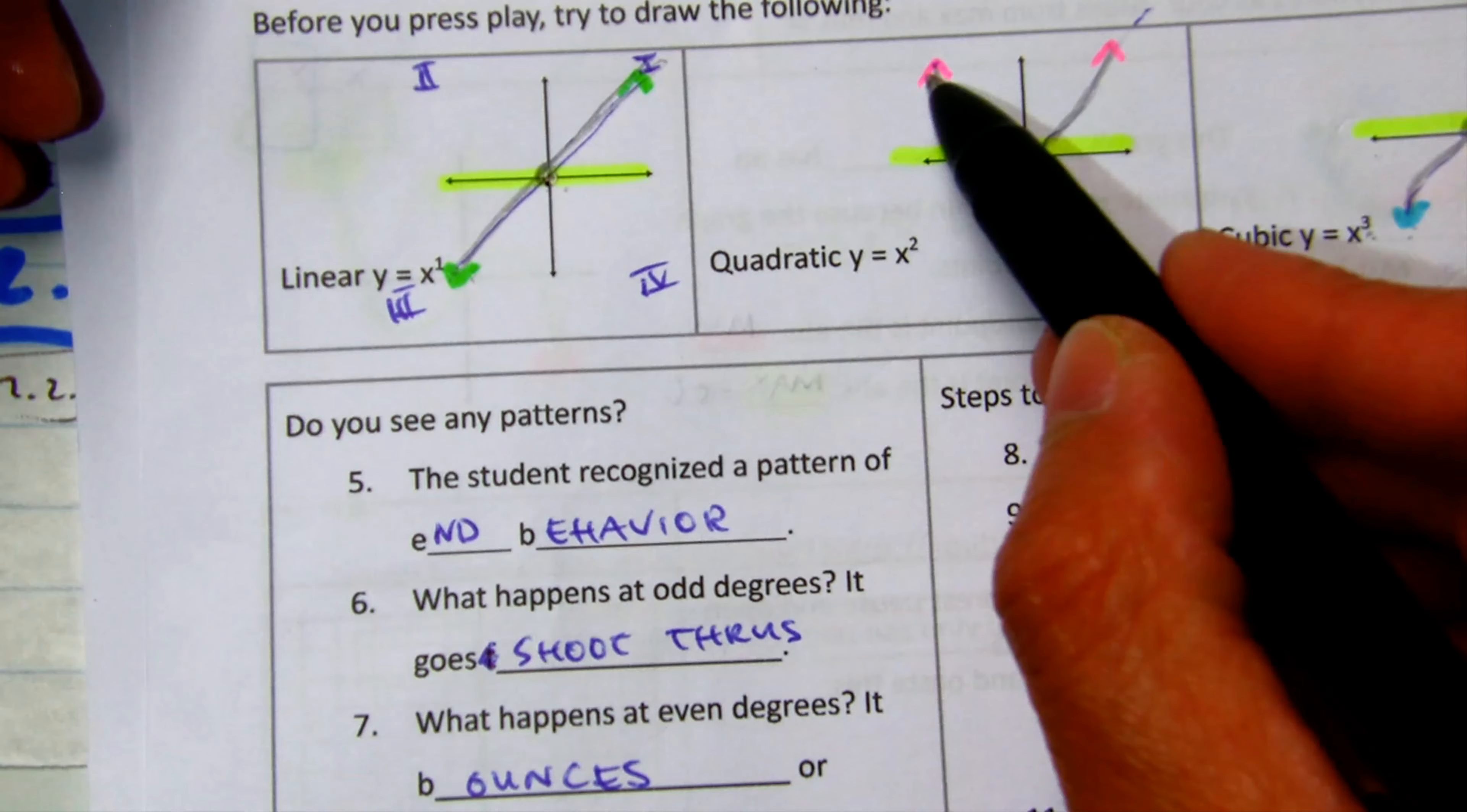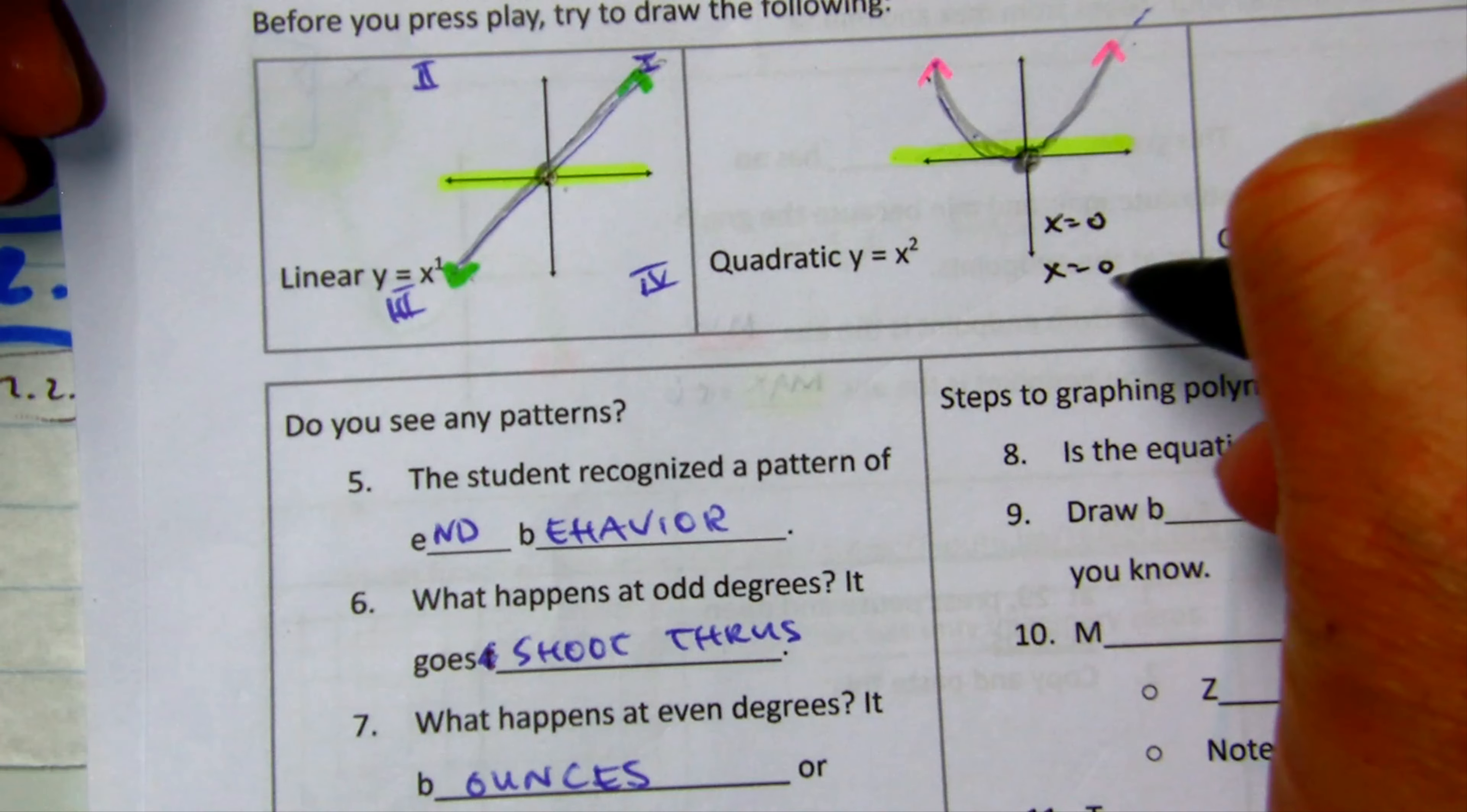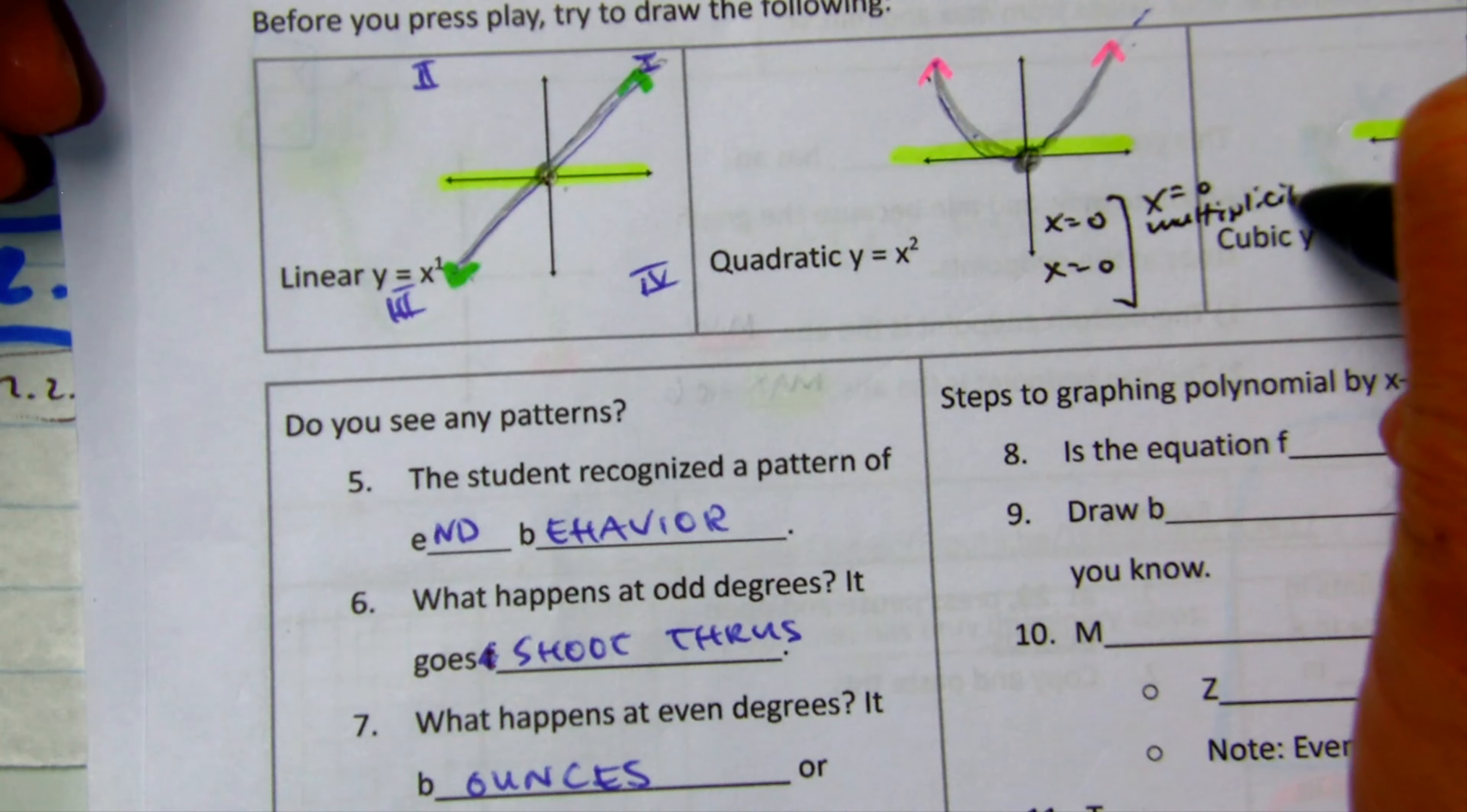Over here, this is a bounce or kiss. This is worth 2, so we would say something like x equals 0 or x equals 0. Instead of writing it twice, we would probably just write x equals 0 with a multiplicity of 2. Multiplicity of 2 sounds like the word multiply.